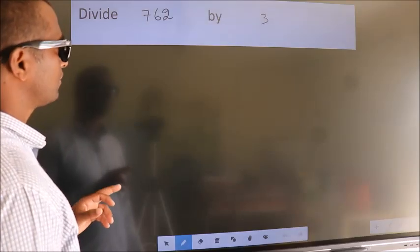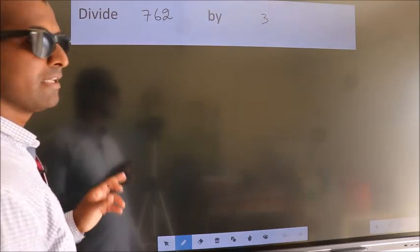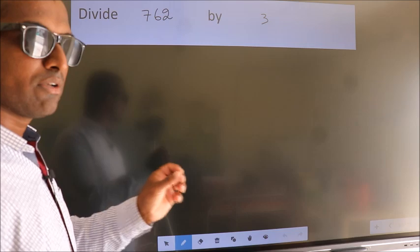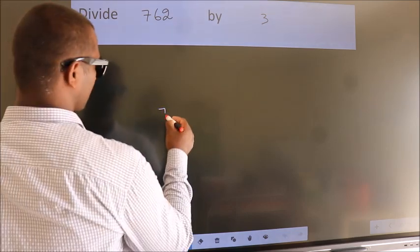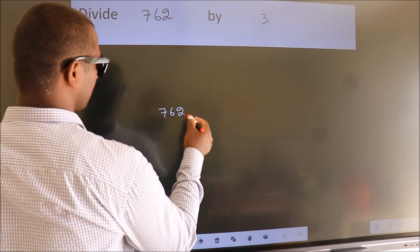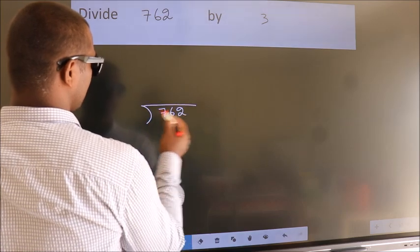Divide 762 by 3. To do this division, we should frame it in this way: 762 here, 3 here.